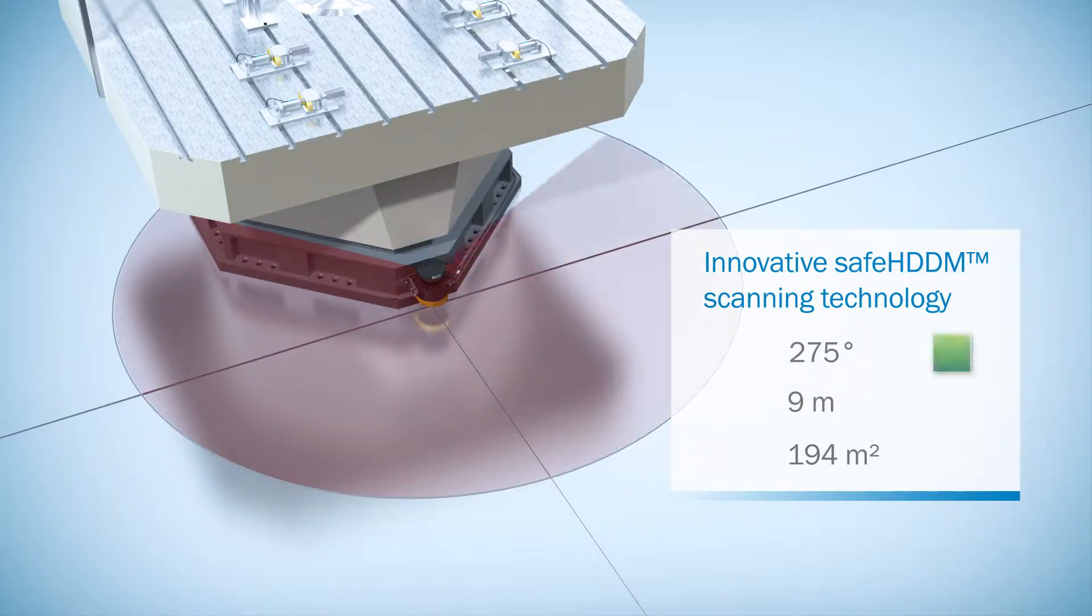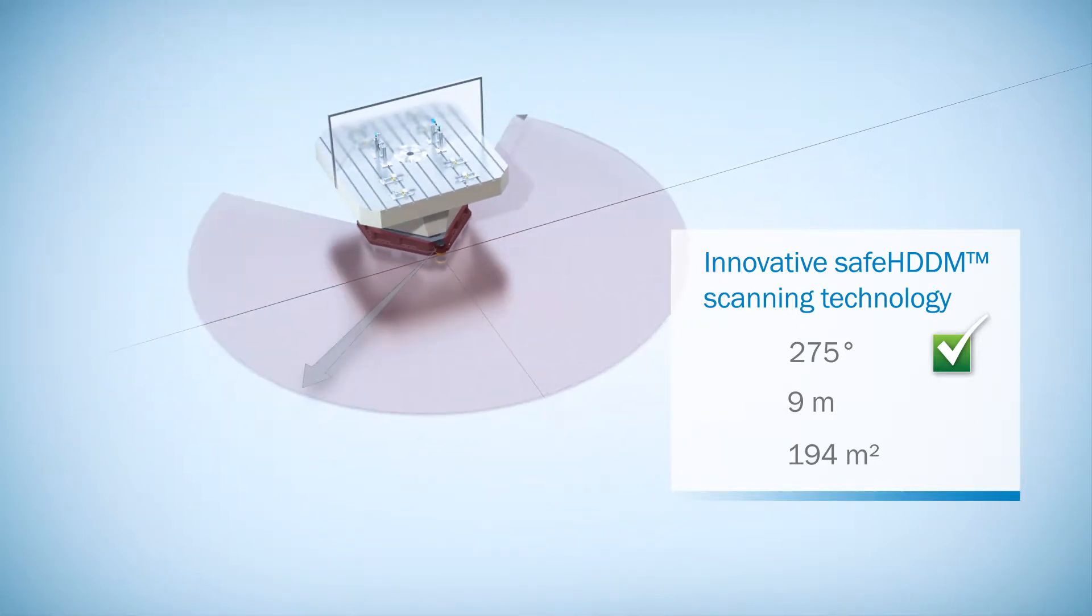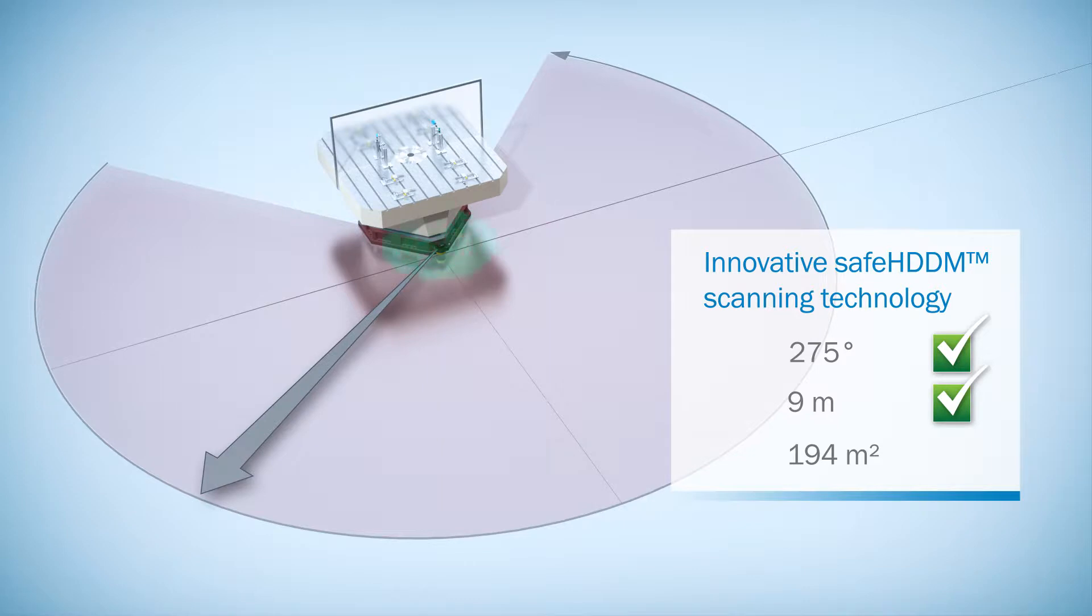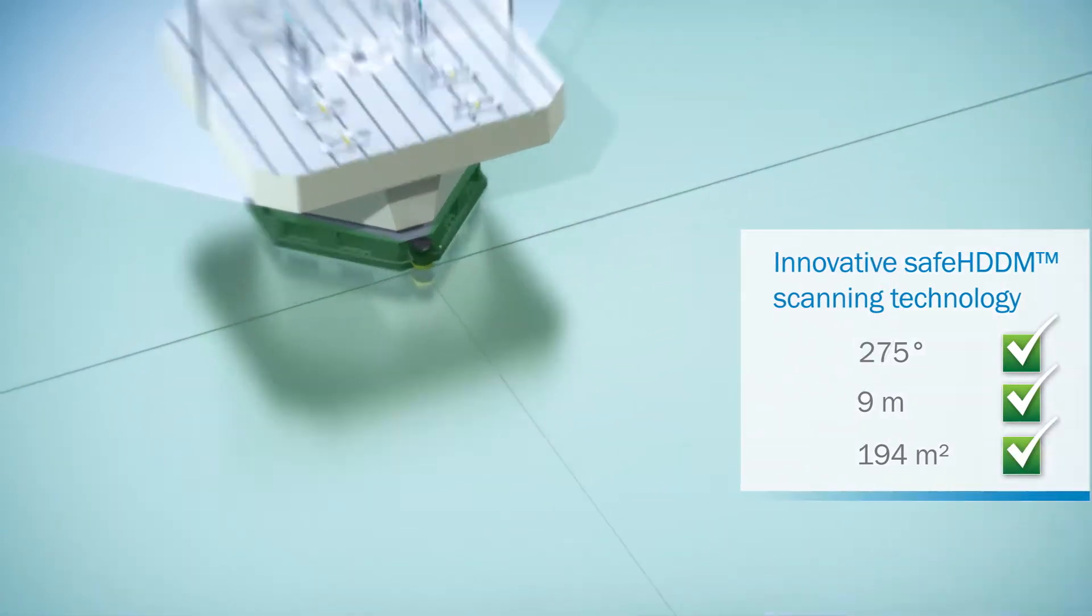MicroScan3 monitors an angular range of up to 275 degrees and features a protective field range of up to 9 meters, allowing it to protect a large area of up to 194 square meters.